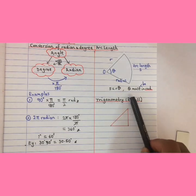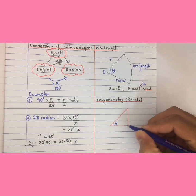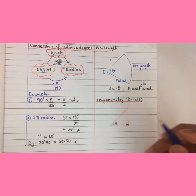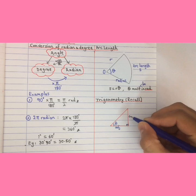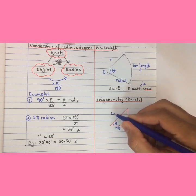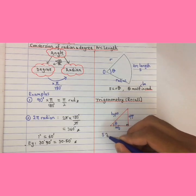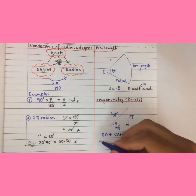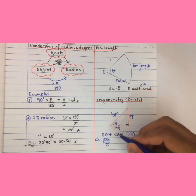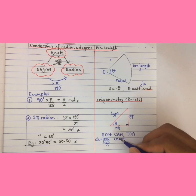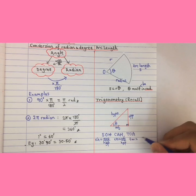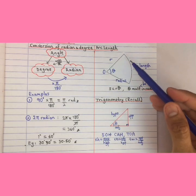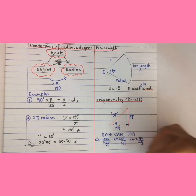Just to recall trigonometry: if you label the angle theta and this is a 90 degree angle, the side closest to theta is adjacent, the opposite side is opposite, and the longer side is hypotenuse. So sin theta equals opposite over hypotenuse, cos theta equals adjacent over hypotenuse, and tan theta equals opposite over adjacent. This is just a recap because some questions require you to use this concept to find the length of the radius or some hidden length in your question.